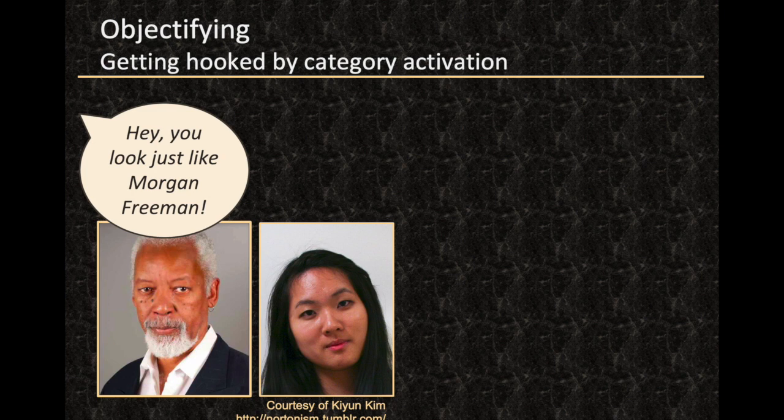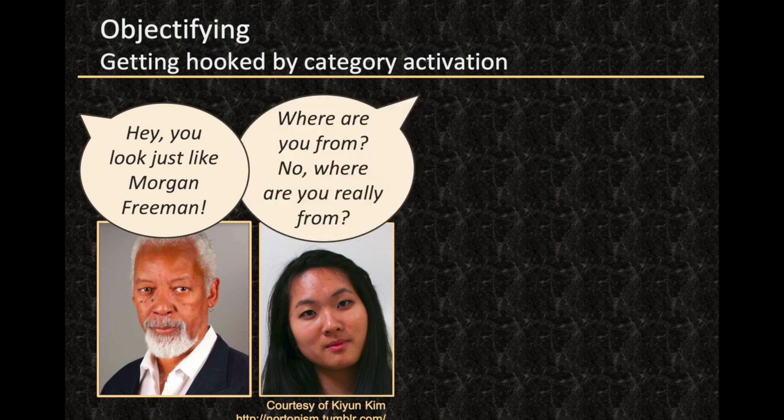Another classic example: seeing an Asian woman and asking her, 'Where are you from?' And then when she says, 'I'm from Issaquah,' you say, 'No, I mean, where are you really from?' — because you've been hooked by her Asian features. When she says Issaquah, that doesn't satisfy your brain's need to categorize her with something Asian. So you persist, and that's where the microaggression shows up.